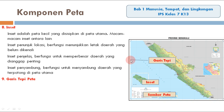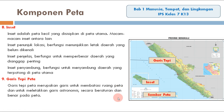Yang kesembilan adalah garis tepi peta. Garis tepi peta menunjukkan garis untuk membatasi ruang peta dan untuk meletakkan garis astronomis secara beraturan dan benar pada peta.